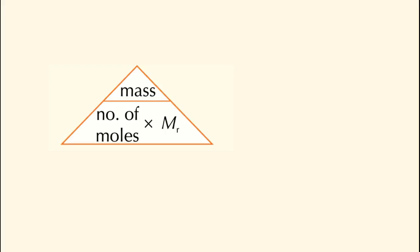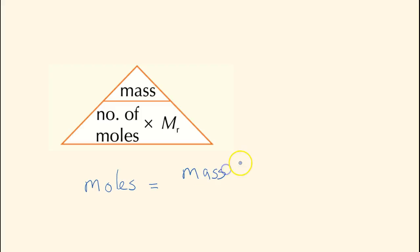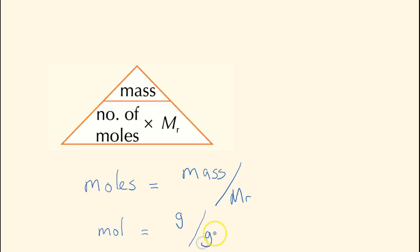As a recap from the last lesson, we should be able to remember this equation for the number of moles if we've got a solid substance in grams. That is: moles of a substance is equal to the mass divided by the molecular mass. The units are mol, equal to the mass in grams divided by the Mr which is in grams per mole.